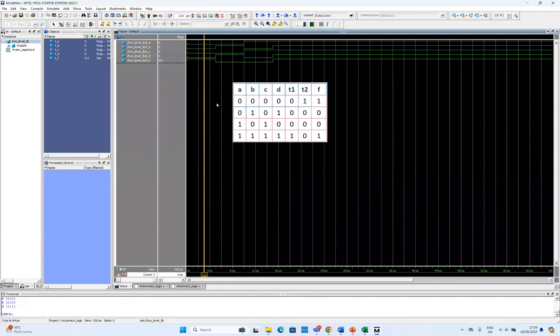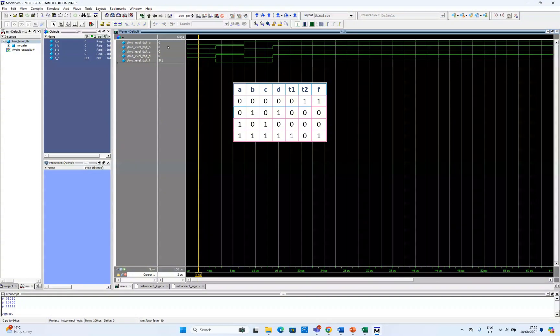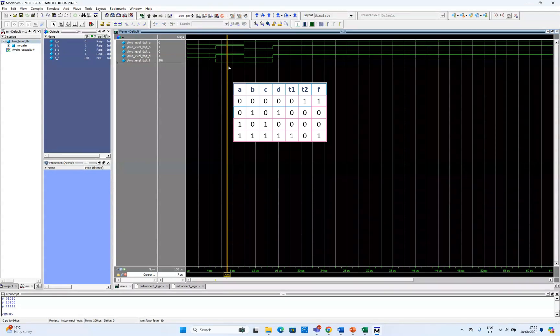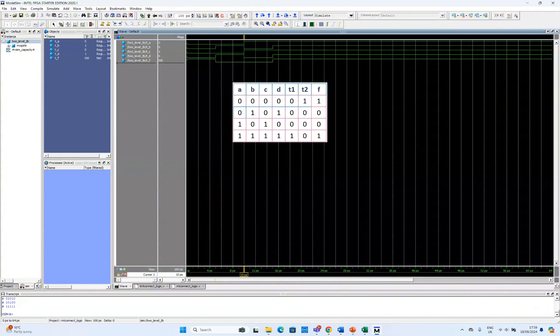Now we can compare it with the brief truth table. You can see here if we have 0 0 0 at the input then our output is 1, which is similar to the brief truth table. And then if we have 0 1 0, 0 1 then the output is 0. And if we have 1 0 1 0 then the output is again 0. And if we have all 1 at the input then the output will be 1.